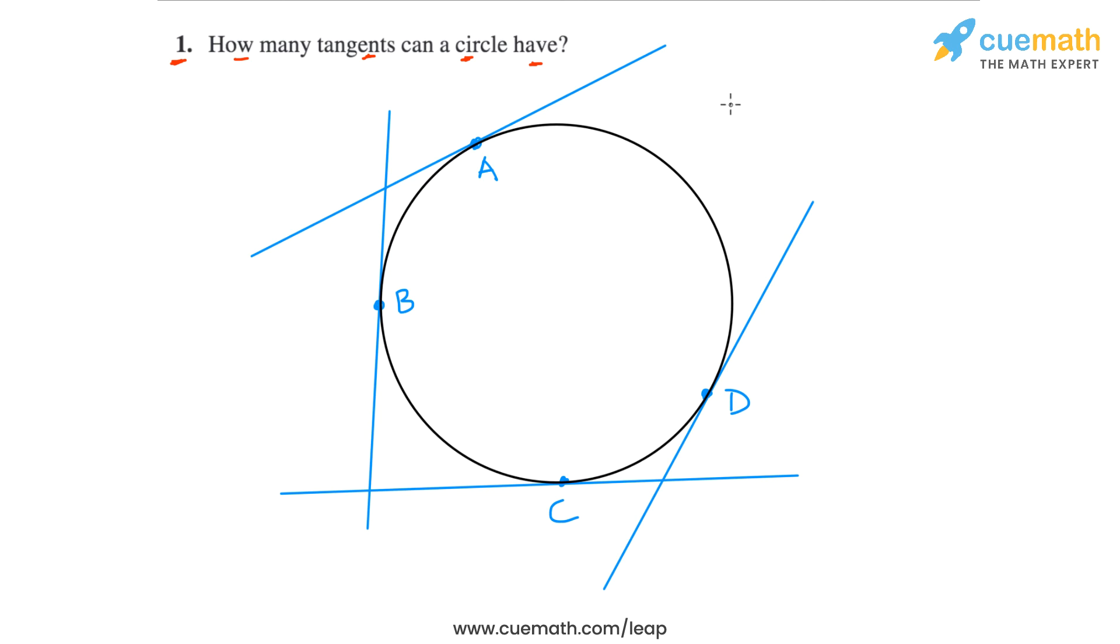Therefore, for any circle, we can have infinitely many tangents. Infinitely many is the answer for question number one.